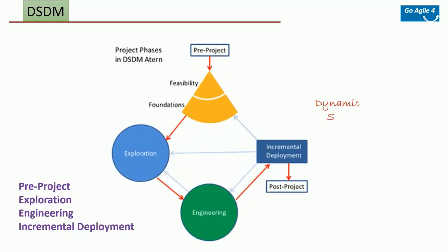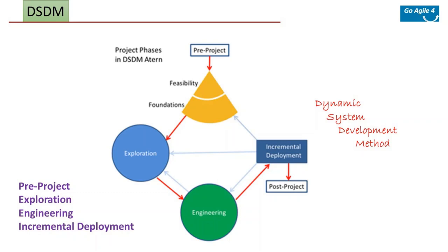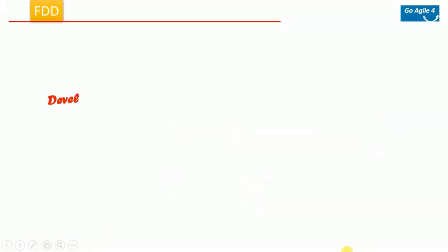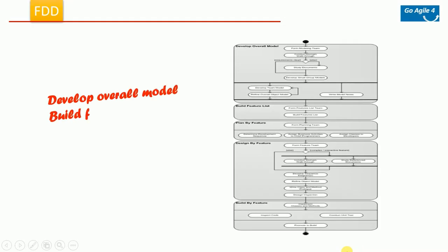DSDM stands for Dynamic Systems Development Method. It is an iterative and incremental approach — get used to those terms as they appear throughout agile. There is constant customer collaboration built into this model. Back in the day there was a model called Rapid Application Development, which was popular but had its own weaknesses. DSDM was developed to bring discipline into rapid application development — that's how it was born.